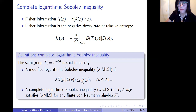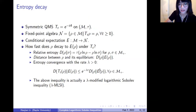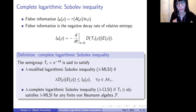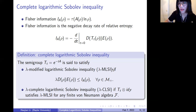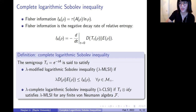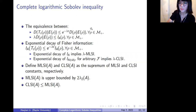The second question is whether the exponential decay definition and the inequality definition are both called lambda-MLSI — and yes, they are equivalent. The next question is why we study CLSI. Is it the same as lambda-MLSI? First, the exponential decay and the second definition are equivalent. When we study CLSI, we actually study something stronger — the exponential decay of Fisher information, which is stronger than MLSI. Also, studying exponential decay of a tensor with the identity is stronger than CLSI itself.